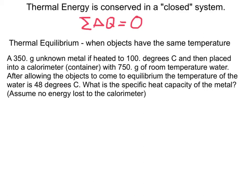So we put it in a calorimeter that has 750 grams of room temperature water in it. After allowing the objects to come to equilibrium, the temperature of the water now is 48 degrees Celsius. What is the specific heat capacity of this metal?